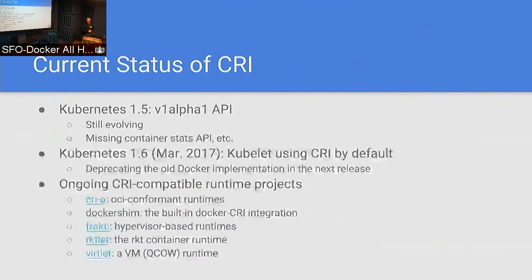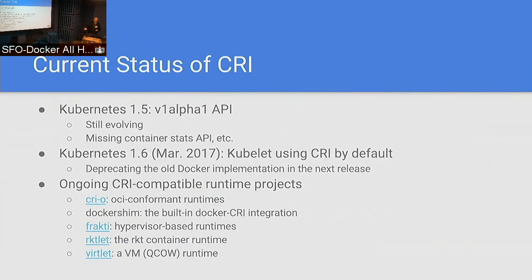The current status of CRI: Kubernetes is currently shipping v1, which was our alpha API — very much still evolving. Kubernetes 1.6, which releases next month, will be deprecating our non-CRI Docker implementation. Right now our code literally has two full implementations of the Docker shim stack. We'll be deprecating the old one and shifting everything to the CRI-based one. And there are a whole bunch of community-based projects building to the CRI interface — I'm learning about new ones pretty much every week.